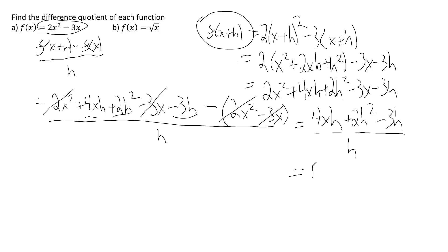If you notice, each term in the numerator has an h, so we could factor that out and get h times the quantity 4x plus 2h minus 3 all over h. And now these h's cancel, and the whole problem simplifies to 4x plus 2h minus 3.